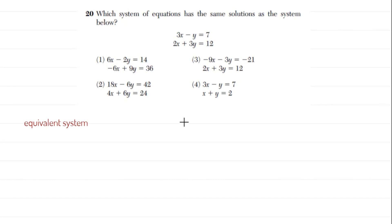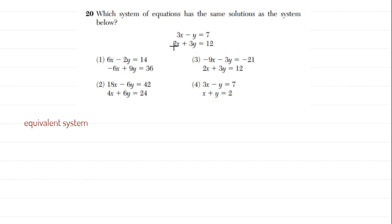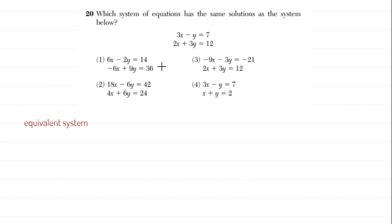This same idea applies to systems just as it does to one equation. Looking at answer choice one: 6x minus 2y looks like they multiplied the first equation by two — that's good. But the bottom equation looks like they multiplied the first term by negative three yet didn't multiply the second term by negative three, only by positive three. So that's automatically out — you need to multiply everything in one equation by the exact same value.